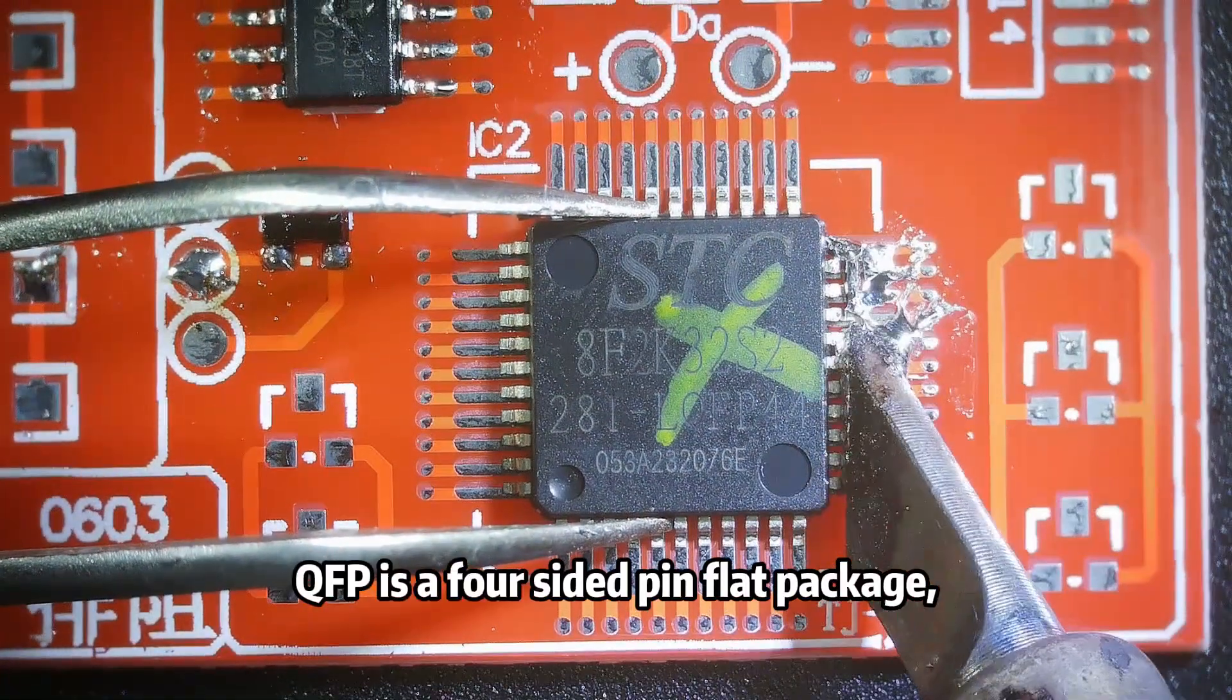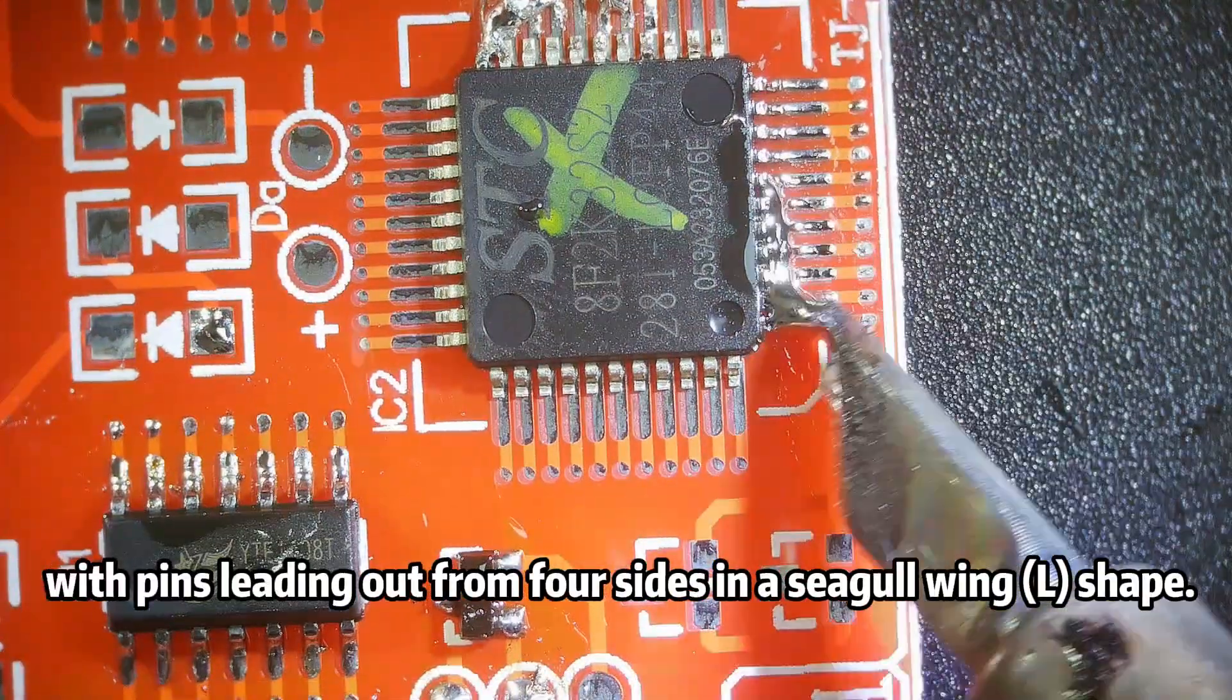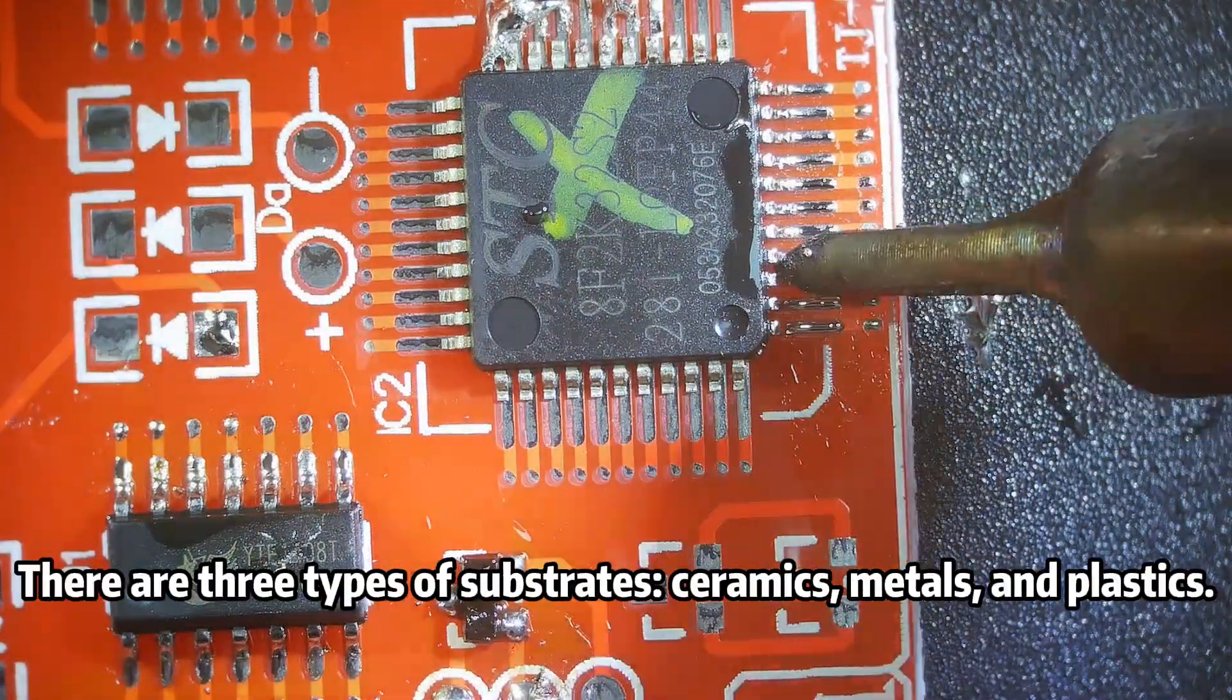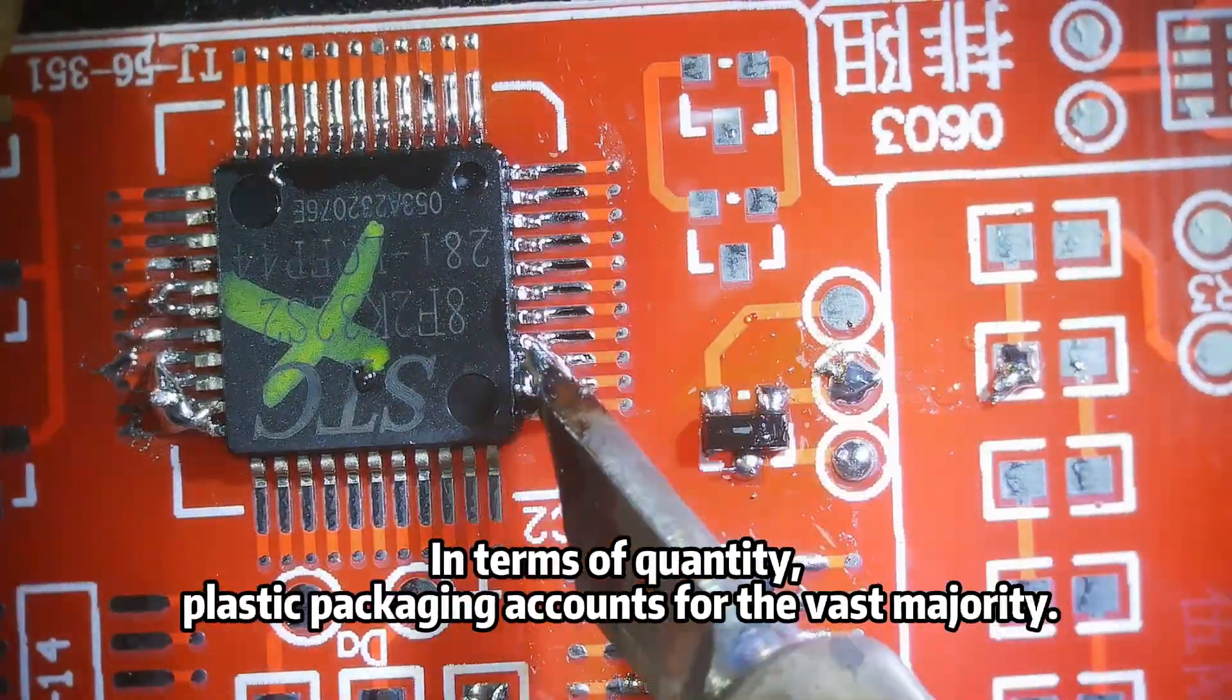QFP is a four-sided pin-flat package, with pins leading out from four sides in a seagull wing L shape. There are three types of substrates: ceramics, metals, and plastics, in terms of quantity.